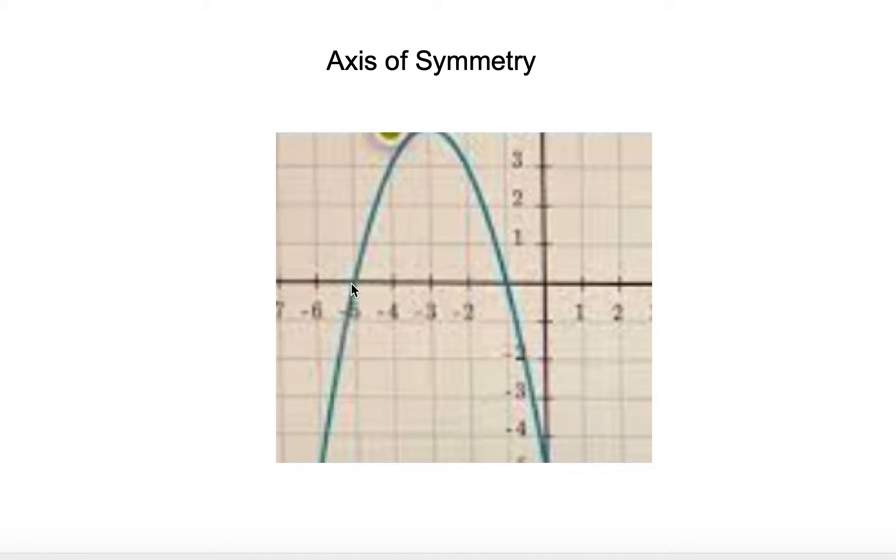So if I know that it's negative 5 and negative 1, I can see from the graph that right smack dab between negative 5 and negative 1, I could count 1, 2, 3, 4, so half of 4, so my axis of symmetry would be right here.